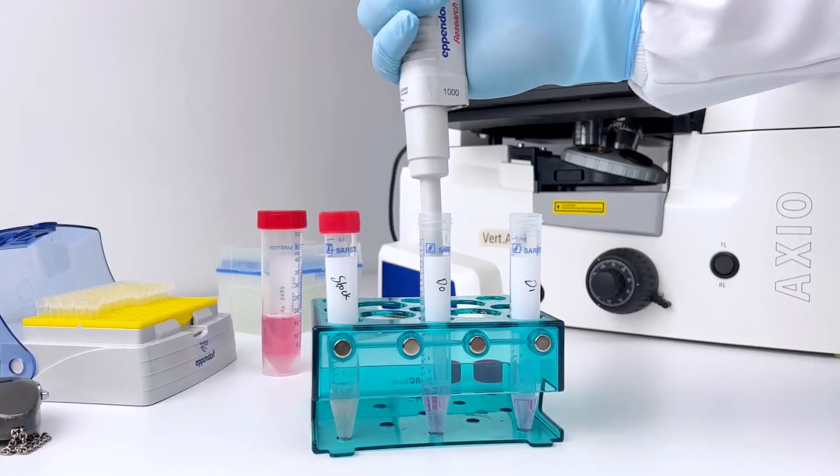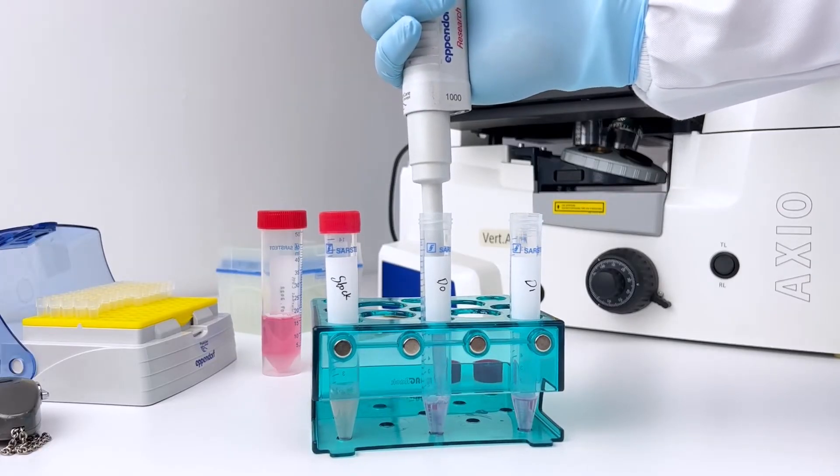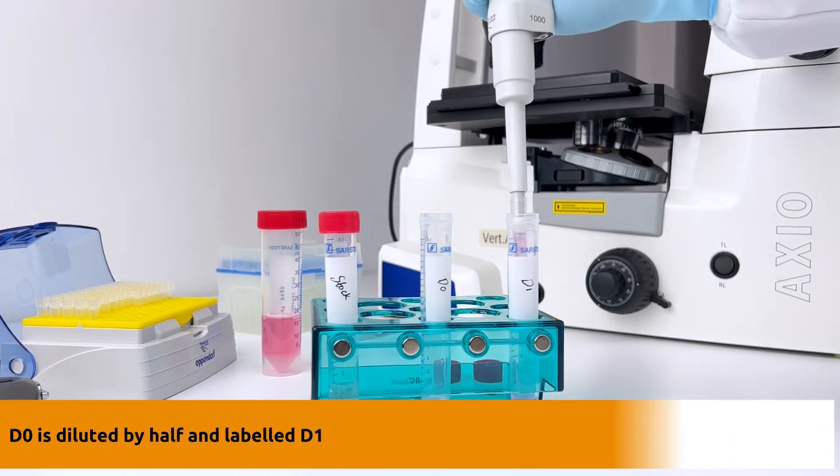With D0 prepared, the next step is serial dilution. D0 is diluted by half and labeled D1.